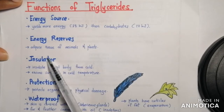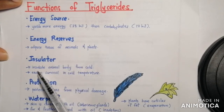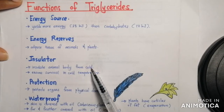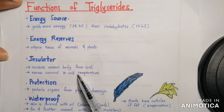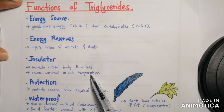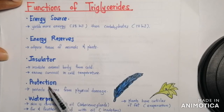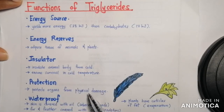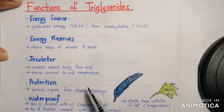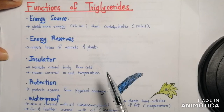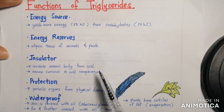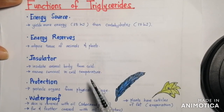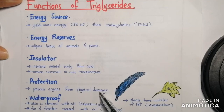Triglycerides also act as an insulator — they insulate the animal body from cold and ensure survival in cold temperatures. They also protect organs from physical damage. Adipose tissue found near the intestines, kidney, heart, and muscle gives mechanical support to the organs and prevents physical damage.